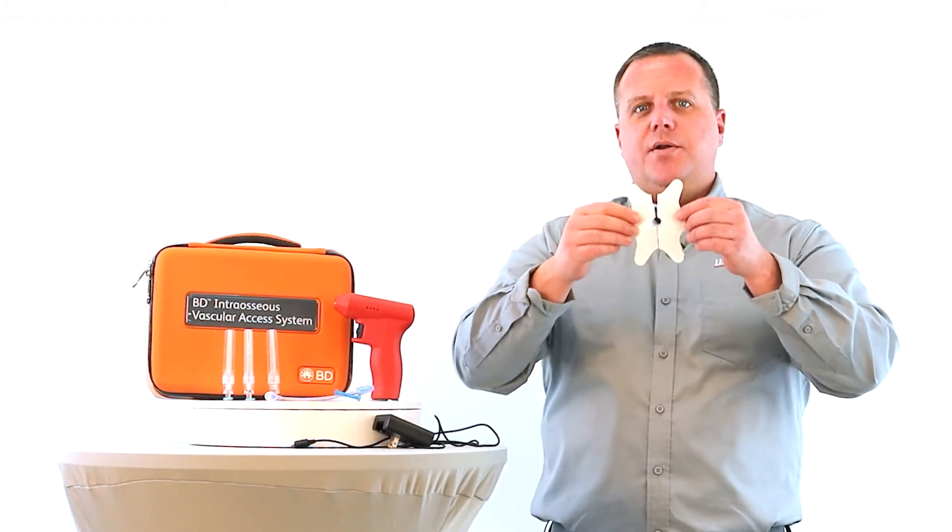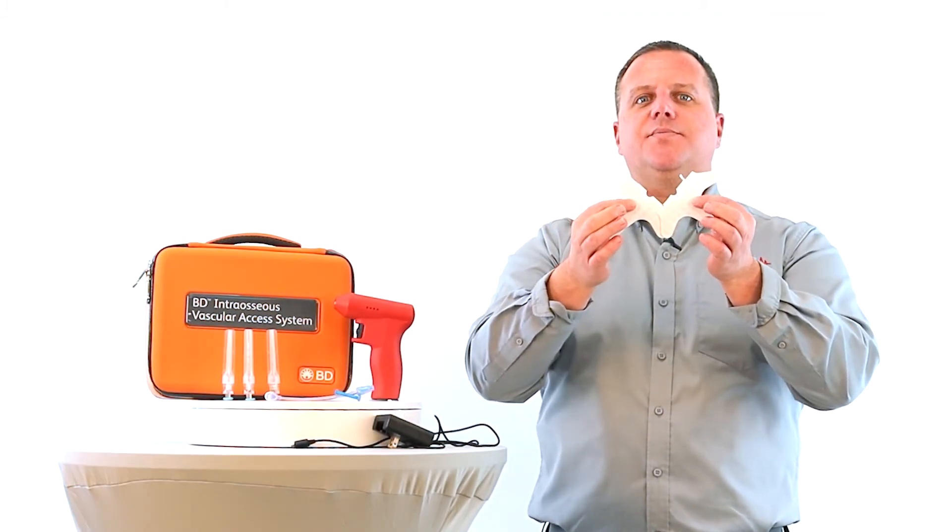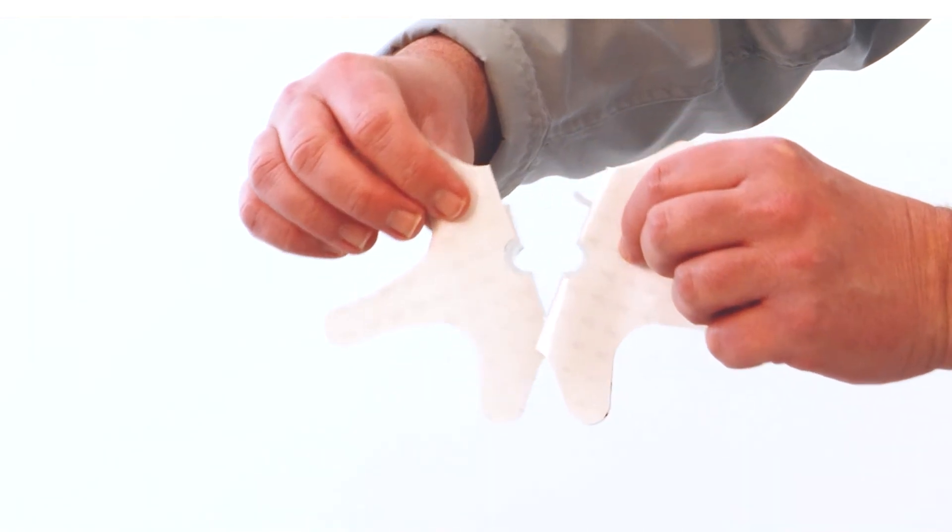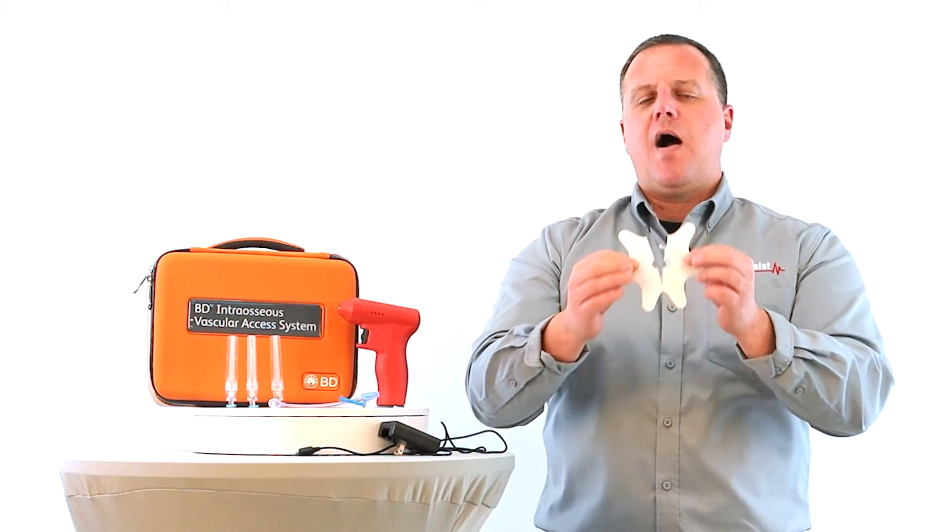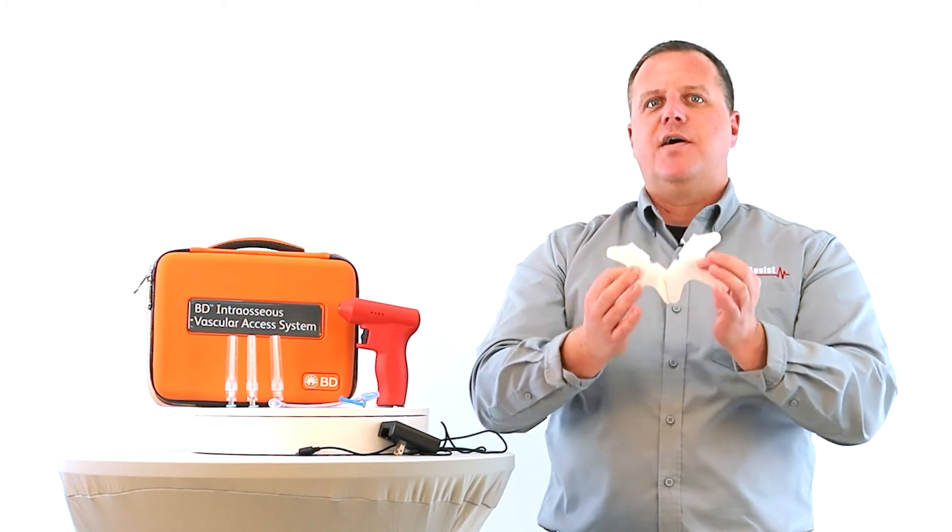The next amazing feature I want to talk about is the one-of-a-kind open clasp securement system. This basically is going to allow the end user to assure their I.O. line is patent prior to final securement.